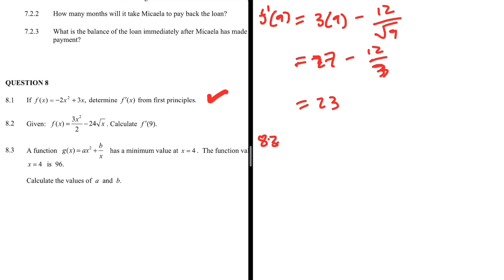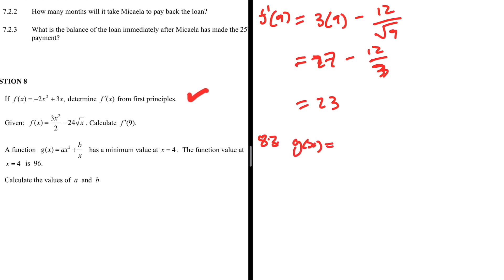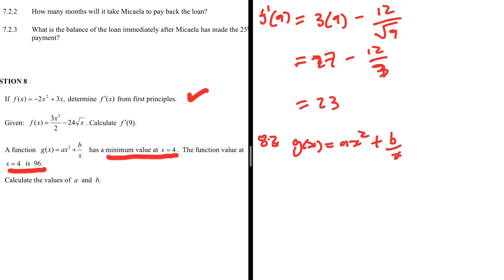Question 8.3: a function g(x) = ax² + b/x has a minimum value at x = 4, and the function value at x = 4 is 96. We need to calculate the values of a and b. We have two pieces of information: a minimum at x = 4 (meaning gradient is zero there), and g(4) = 96. Two pieces of information and two unknowns — we can see where this is going.